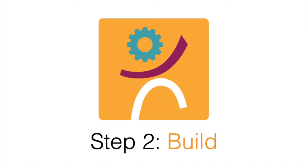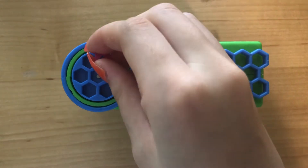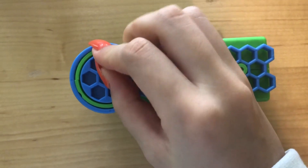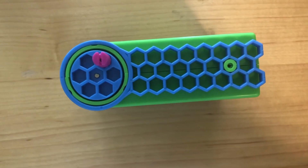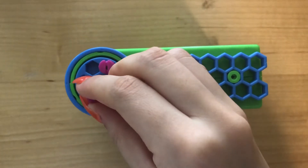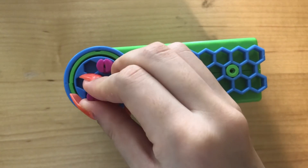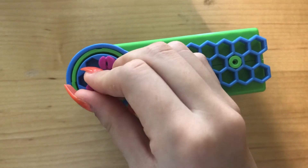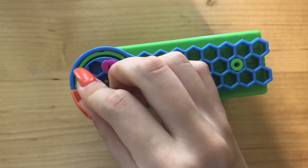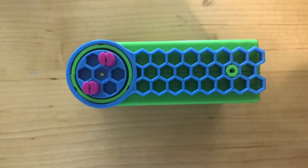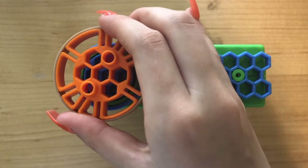Step 2: Build. Connect the pucks to the Trashbot's motors using the axles. For more traction, wrap a rubber band around each wheel. This will help you be more accurate.